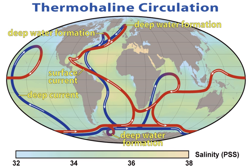Wind-driven surface currents, such as the Gulf Stream, travel polewards from the equatorial Atlantic Ocean, cooling en route, and eventually sinking at high latitudes, forming North Atlantic deep water. This dense water then flows into the ocean basins. While the bulk of it upwells in the Southern Ocean, the oldest waters with a transit time of around 1,000 years upwell in the North Pacific.